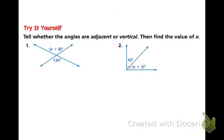So let's give a couple of these a try. Tell whether they are adjacent or vertical, then find the value of x. In number 1, you can see that the two angles are on opposite sides of a vertex of two intersecting lines. So they are vertical. So these are vertical angles.